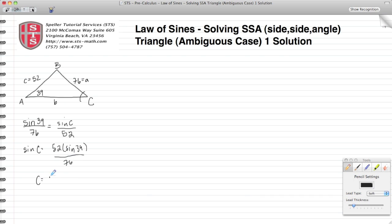we see that C comes out to be approximately 25.5 degrees. Being that we have the ambiguous case, we need to see if there's another possibility for angle C.